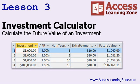We'll build an investment calculator — this is handy if you want to determine the future value of an investment. For example, I'm going to take $1,000, put it in a savings account for one year at 3% with a $10 extra payment. How much will I have after a year? The answer is $1,040.